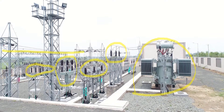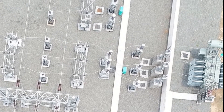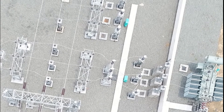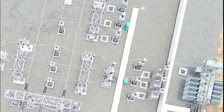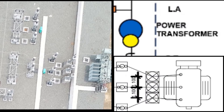With this, it completes a very clear representation of the SLD of a transformer bay. Now let us try to understand it with the top view of the transformer bay, comparing it with the SLD. At the bottom right is the AutoCAD drawing of the SLD.